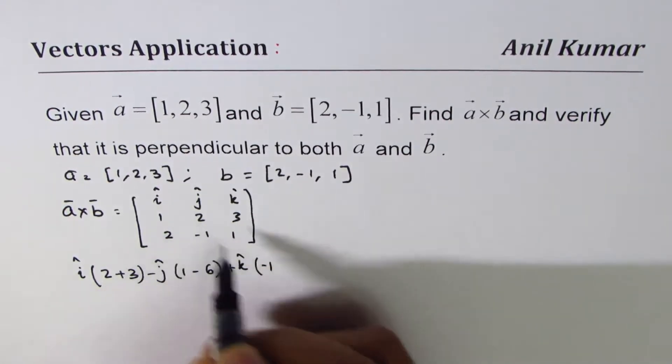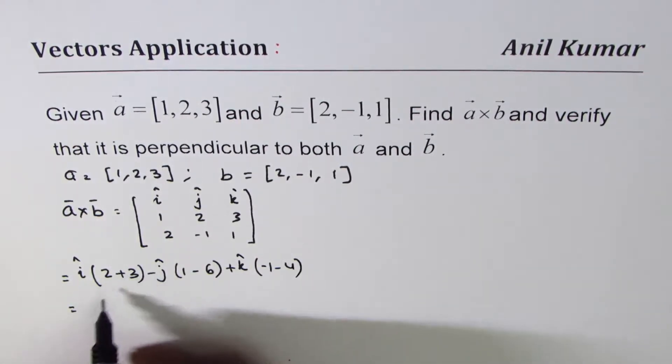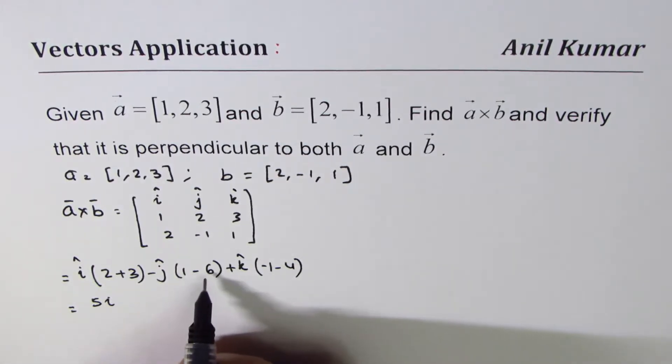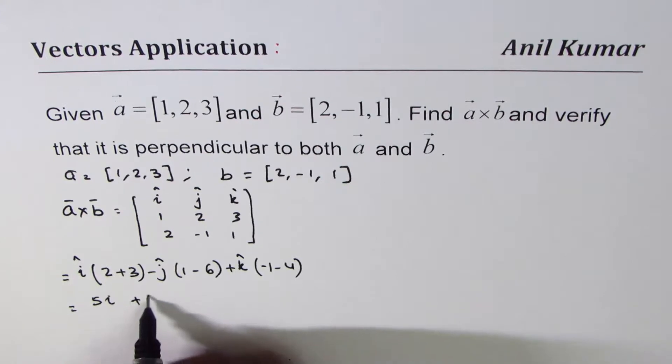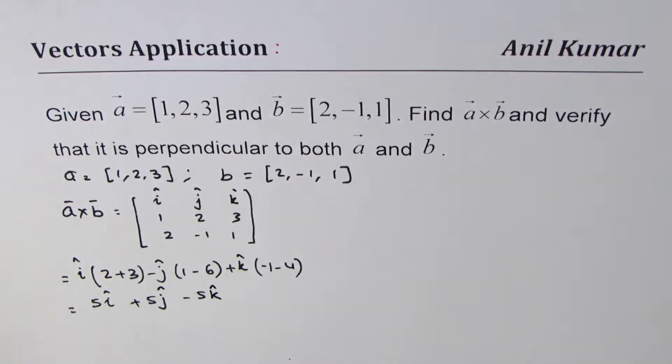Plus k times (1 times -1 minus 2 times 2), so we have 5i (from 2+3), minus 6 makes it plus 5j, and -1-4 gives -5k. These are unit vectors along x, y, z.